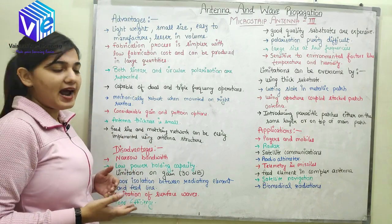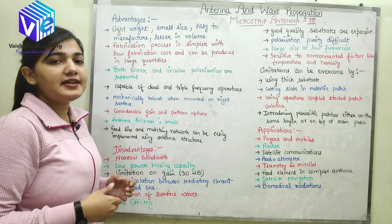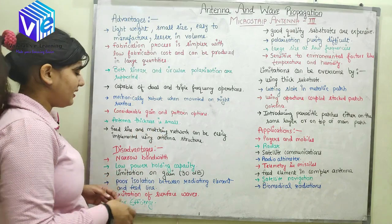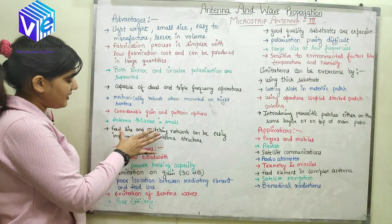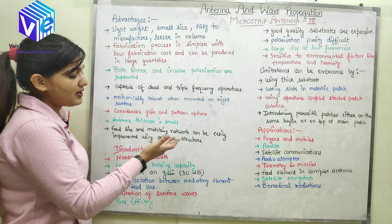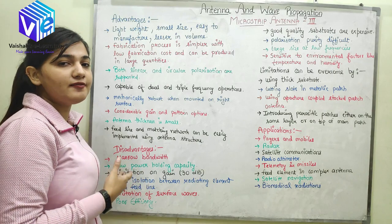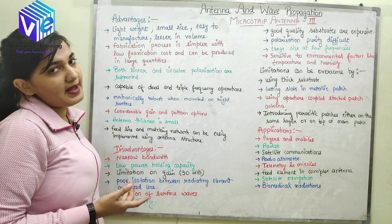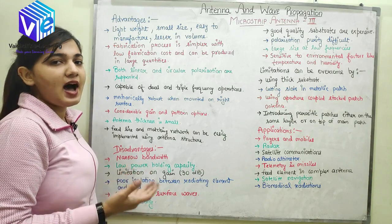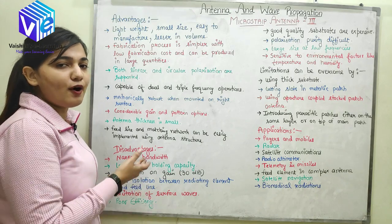The next advantage is that it has very less thickness — the antenna is very thin and it can be used in a wide range of applications because of this quality as well. The next advantage is that feed line and matching network can be easily implemented using the antenna surface. Feed methods are easily implementable and we can easily make them implemented on this surface.